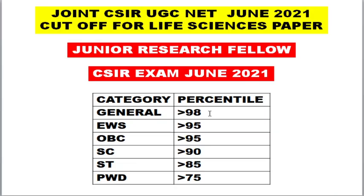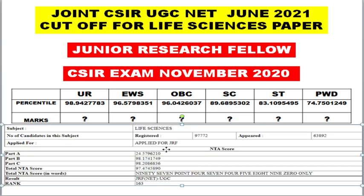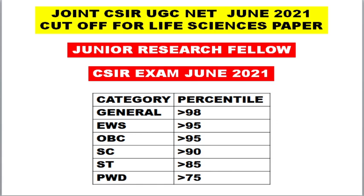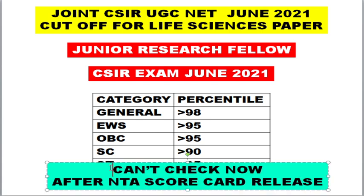For percentile-wise cutoff — for general category, your percentile score should be above 98 to clear the exam. For EWS and OBC, you should get above 95 as your percentile score. For SC, you should get above 90. For ST, you need above 85 as your percentile score. For persons with disability, you need above 75 as your percentile score to clear the examination.